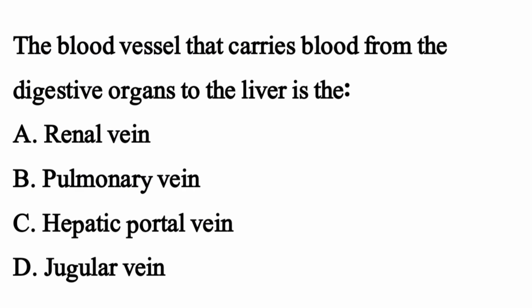The blood vessel that carries blood from the digestive organ to the liver is — the right option is option C: hepatic portal vein.